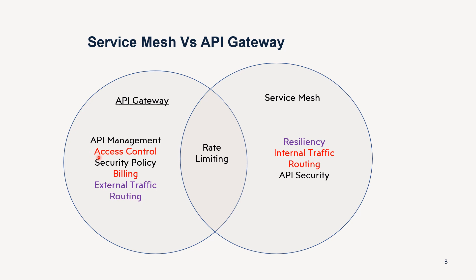If you want control on the access side — who can access which service and who cannot — that can be controlled by the API Gateway because it is the front door to your application. You can put controls at the front door so only eligible requests come inside. Security policies can also be implemented at the API Gateway. If you have some APIs that have been monetized, billing data can be captured at the API Gateway — how many requests have been served — and billing for clients can be done based on that. Traffic routing from external clients can also be handled by the API Gateway.